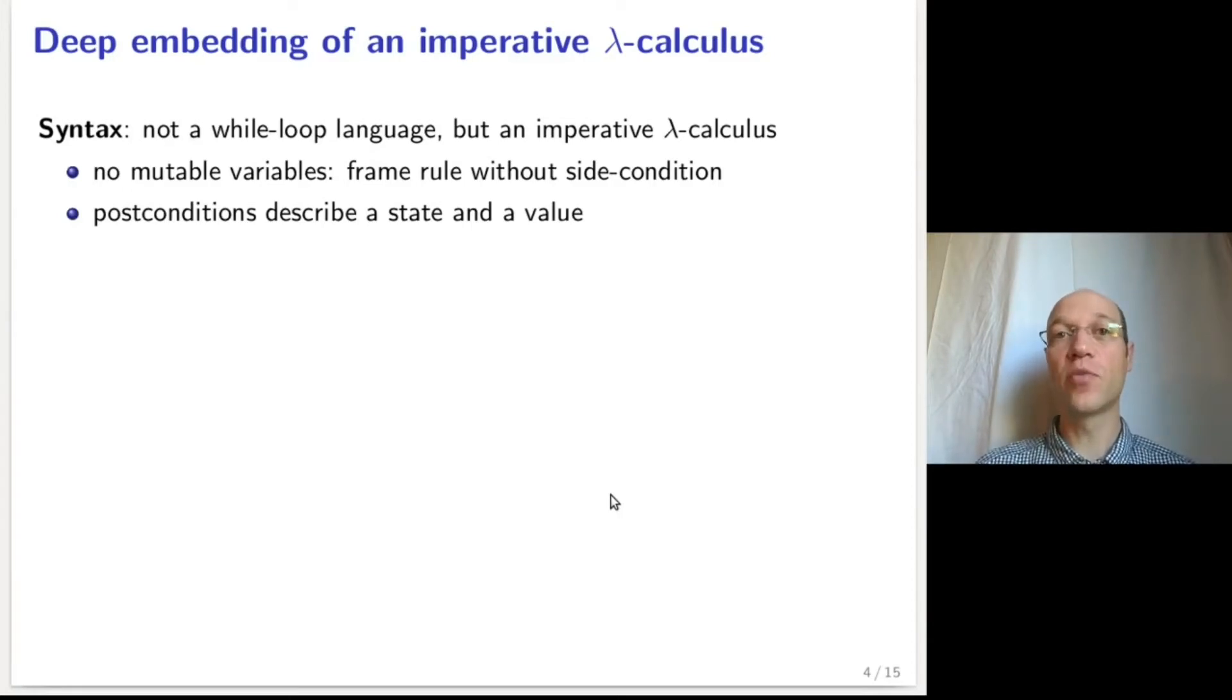This choice leads to major simplification. The fact that there are no mutable variables lead to an elegant statement of the framework without any side condition. At the same time, the use of a lambda calculus means that every term produces a value, and this leads to a minor complication, the fact that post-conditions need to describe not just an output state, but also an output value.